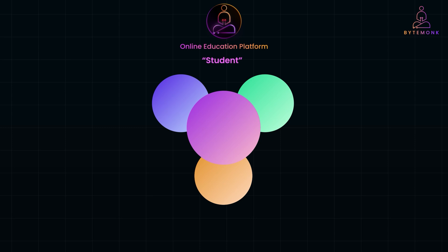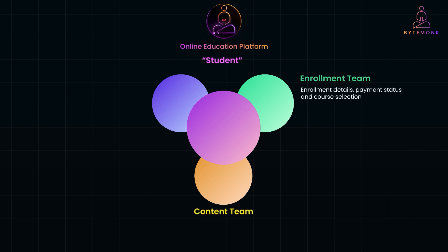Take the term 'student,' for example. For the enrollment team, a student refers to someone who has registered for a course — they focus on enrollment details, payment status, and course selection. For the content team, a student represents someone actively engaging with course materials — they care about progress tracking, lesson completion, and quiz scores.